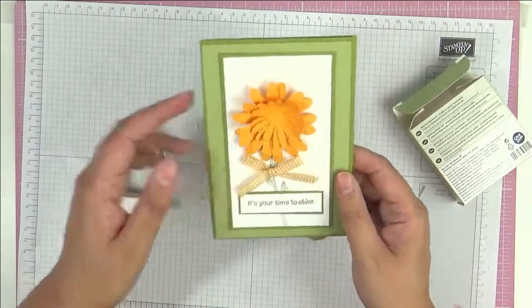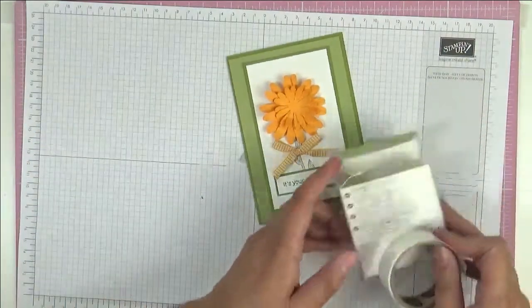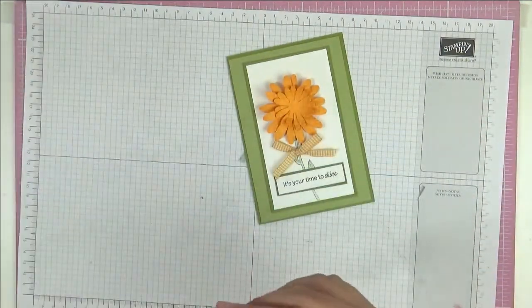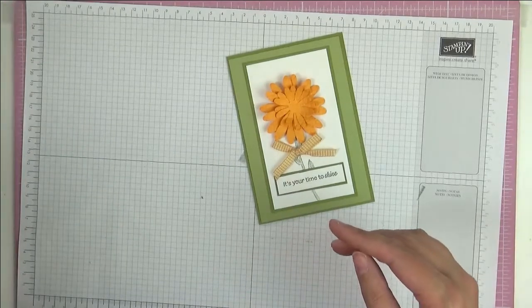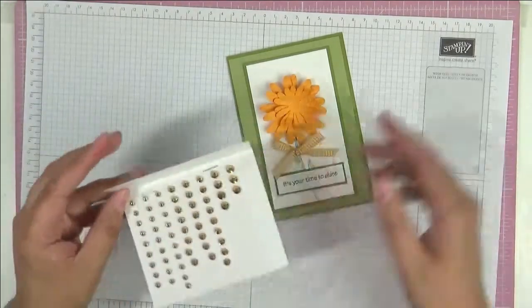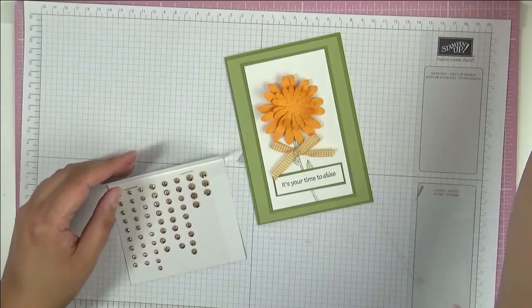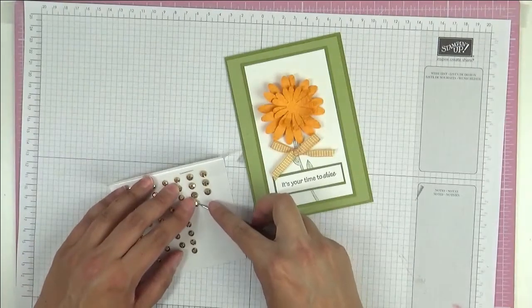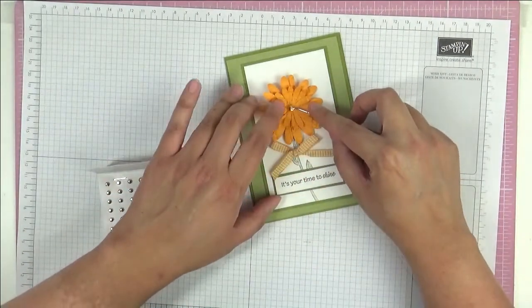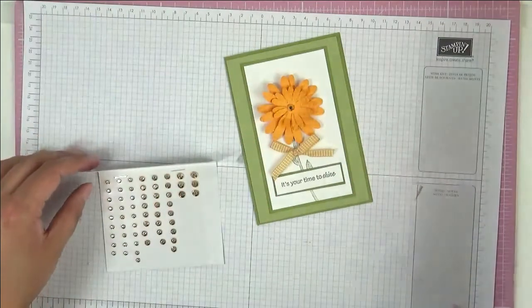So glue dots. There we go. Glue dots away. Time for finishing touches. We're going to use these Gilded Gems and we're going to use a large one here and we're going to put this straight in as our flower center there.